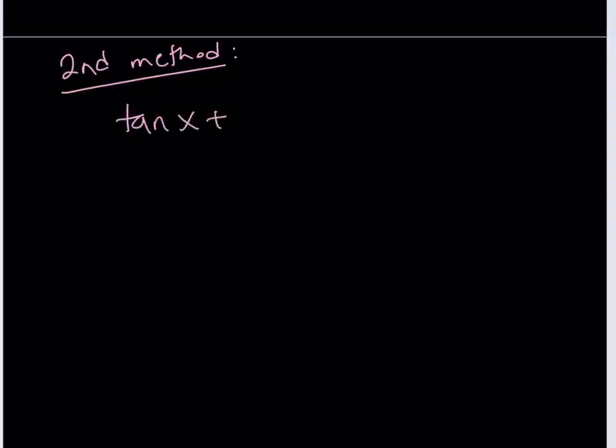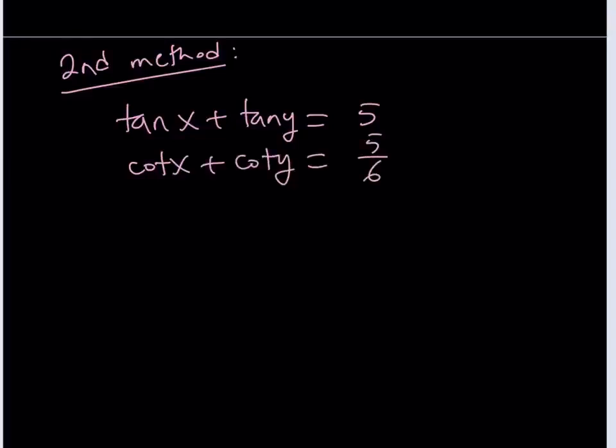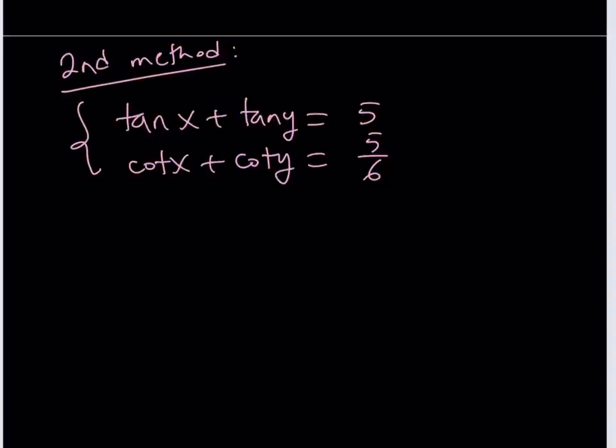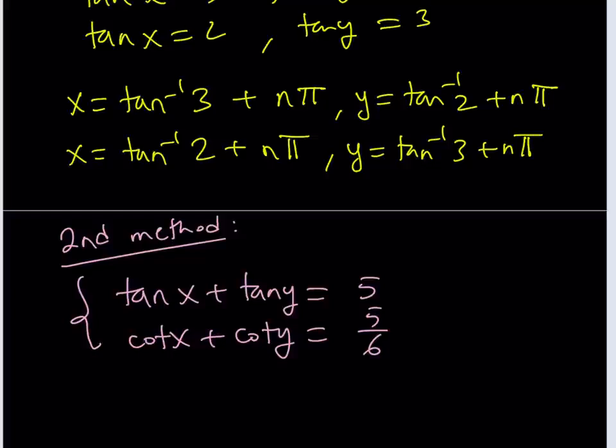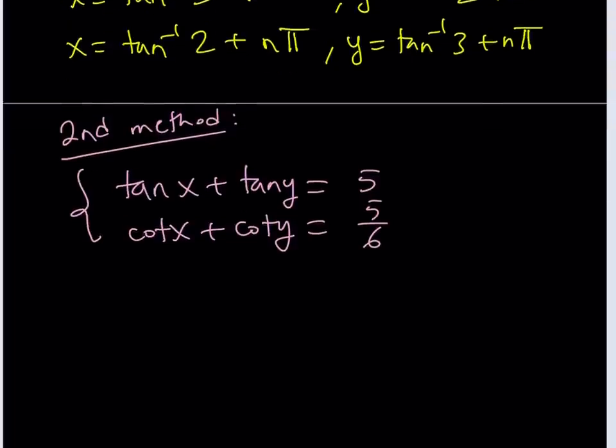Let's rewrite our system. We have tan x + tan y = 5, and cot x + cot y = 5/6. Another thing we should note is these values are going to work because they don't make the equation undefined. With tangent and cotangent, you've got to be real careful. Tangent is undefined at π/2 and 3π/2, and cotangent at 0 and π. So we've got to make sure that they work.